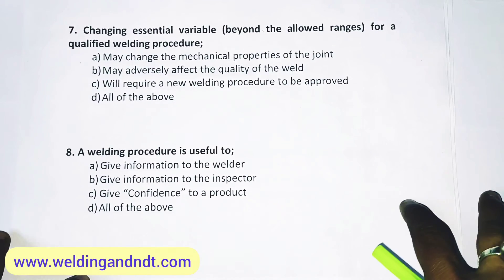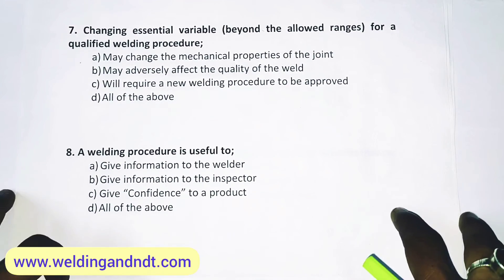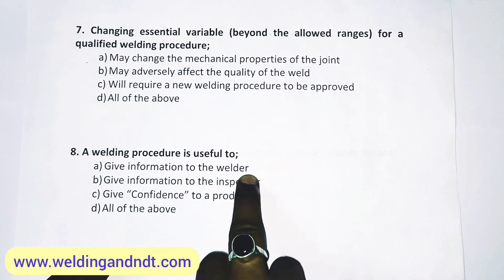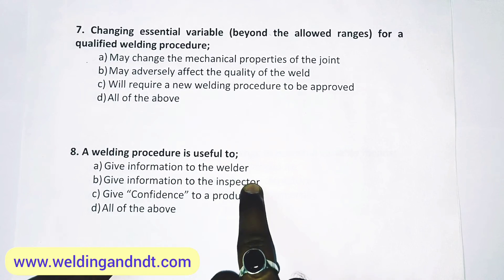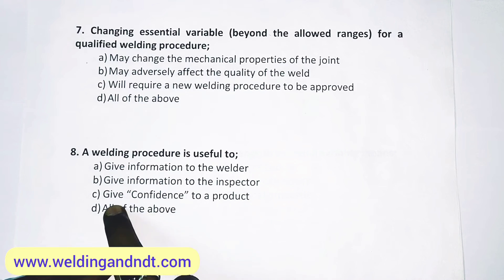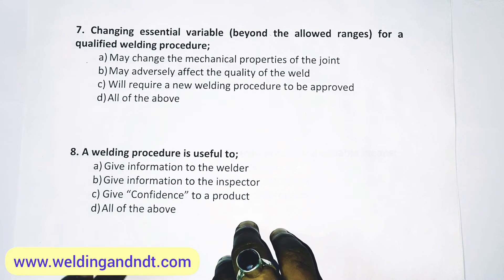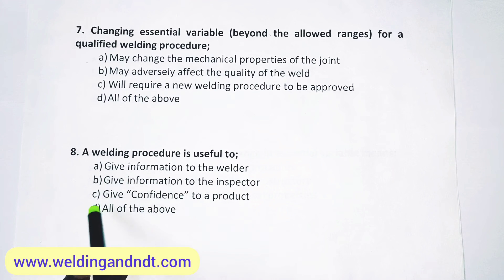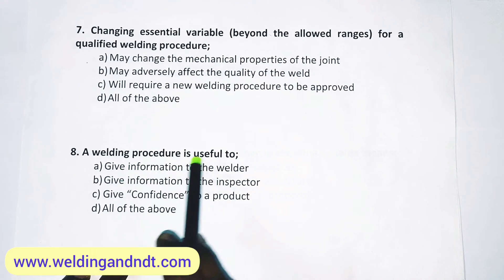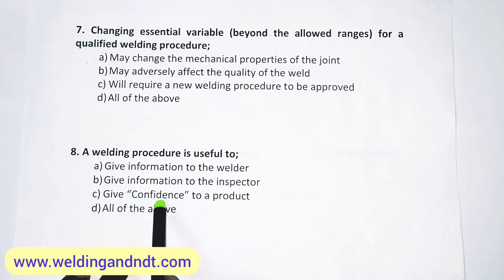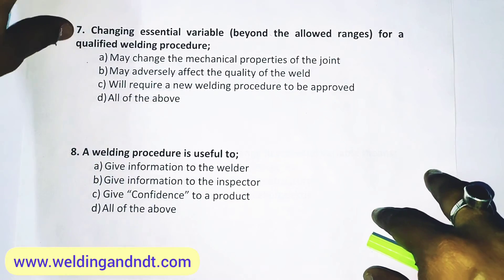Question number 8: A welding procedure is useful to give information to the welder, give information to the welding inspector, give confidence to the product, or all of the above. As explained just earlier, the answer is D — all of the above. It gives information to the welder, information to the inspector, and also gives confidence about the product.